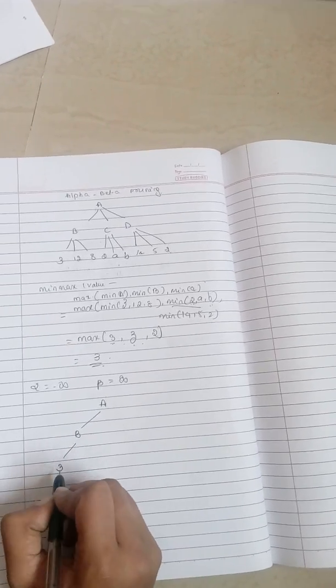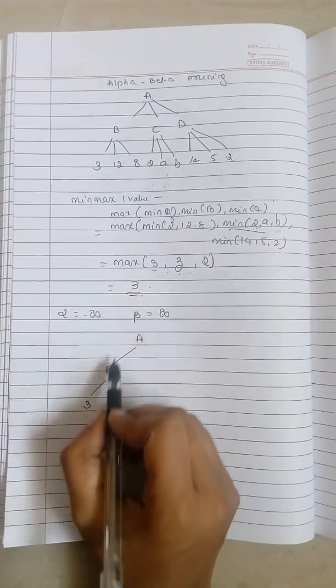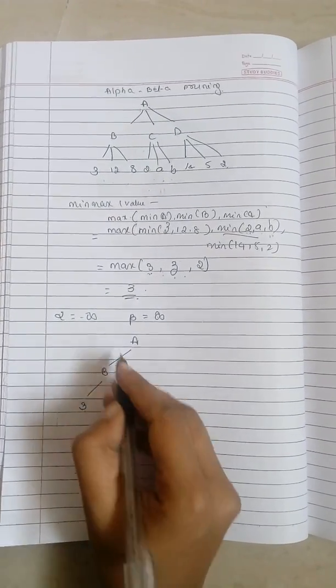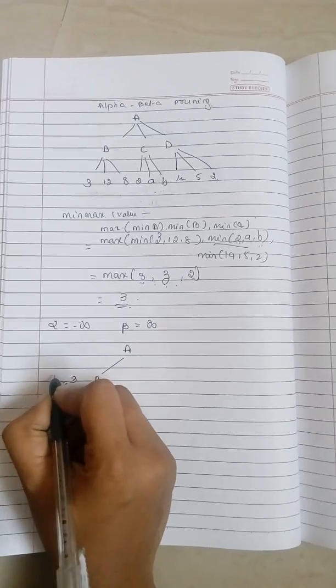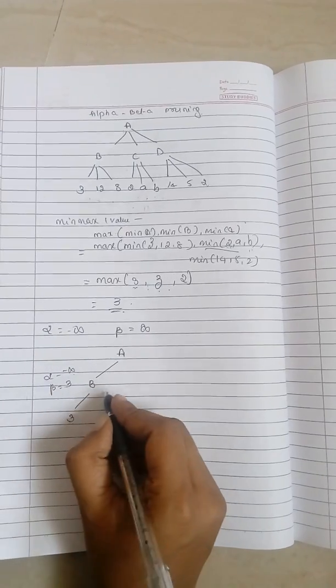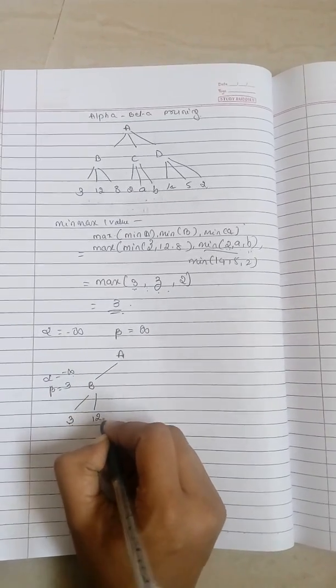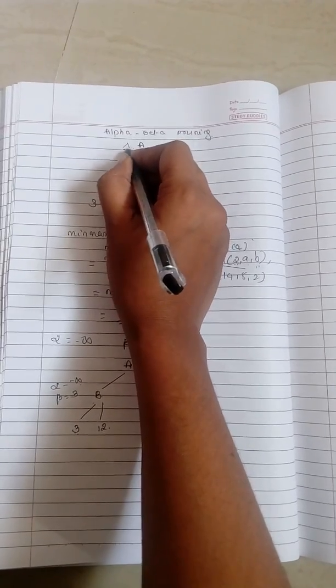This is having the value of 3. Now this 3 will get considered with alpha and beta. So beta will hold the value of 3 and alpha will be still negative infinity. So next 12 will come. This is minimum value.